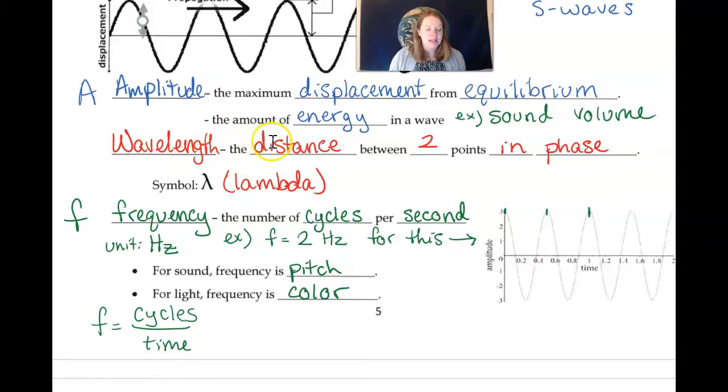The wavelength is the distance between two points that are doing the same thing or in phase of each other. And it's given this funky symbol lambda. This is a Greek letter. And frequency is the number of cycles per second.